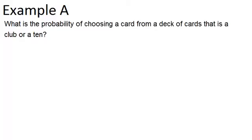In this video, we will look at a few examples to practice working with mutually inclusive events. In example A, it says: what is the probability of choosing a card from a deck of cards that is a club or a 10? So we're going to choose a card and we're thinking about what's the probability that it will end up being a club or a 10.